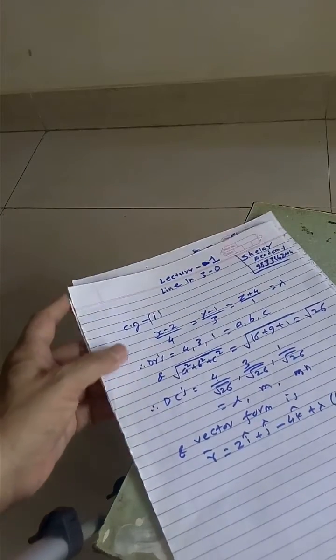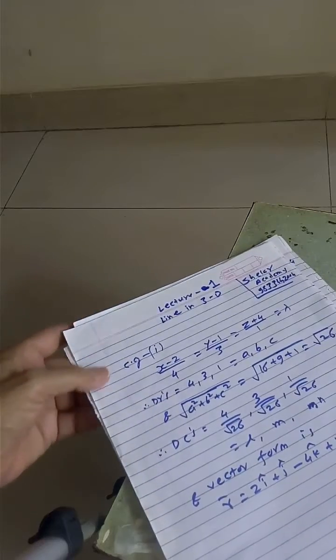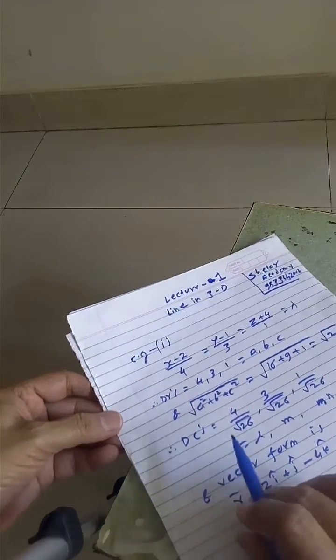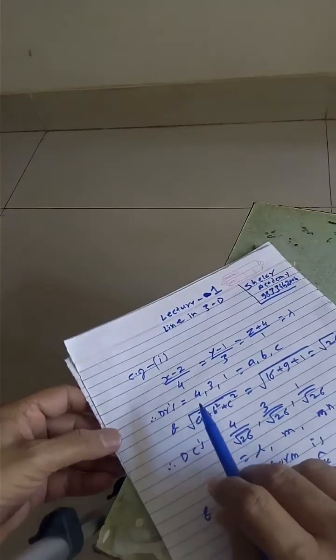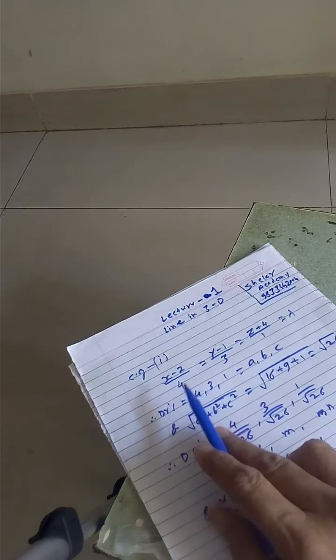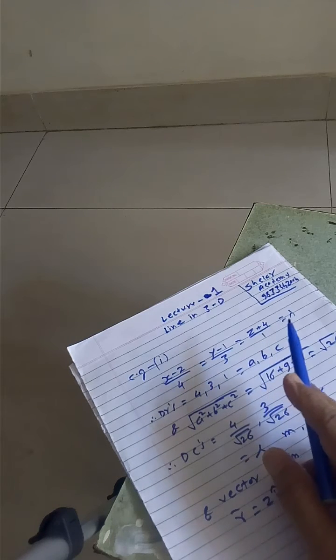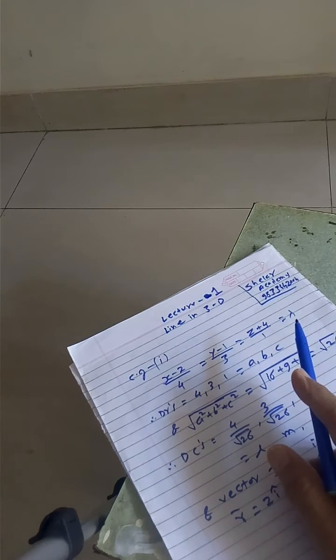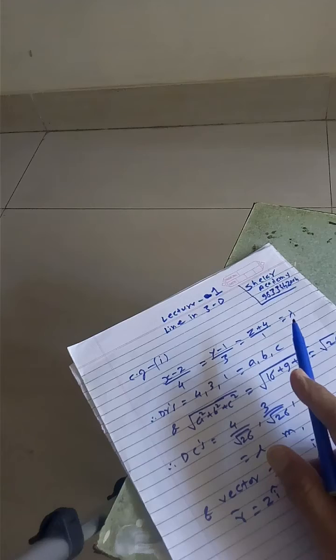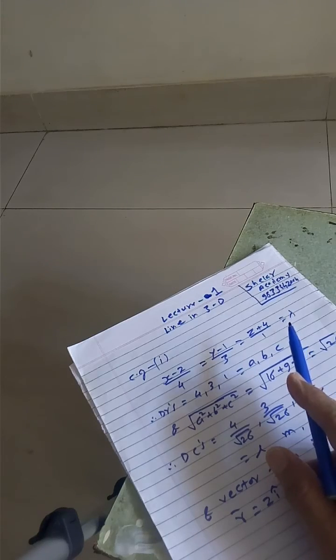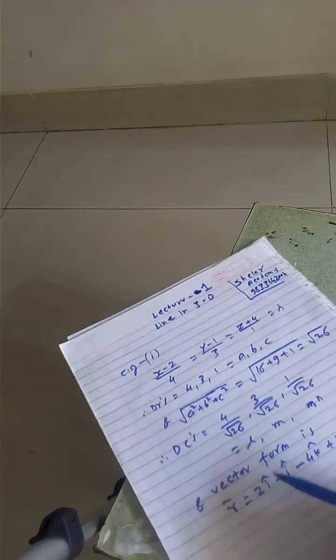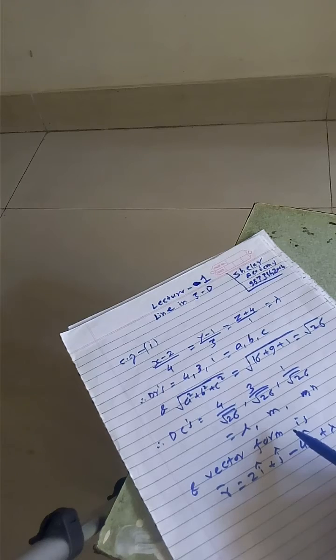Now for this formula, we will consider one example. Suppose the line equation is given (X minus 2) upon 4 equals (Y minus 1) upon 3 equals (Z plus 4) upon 1 equals lambda in Cartesian form and question is to find direction ratios, direction cosines and convert to vector form.